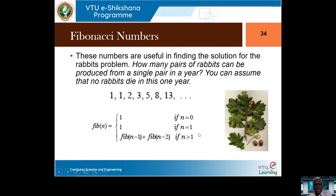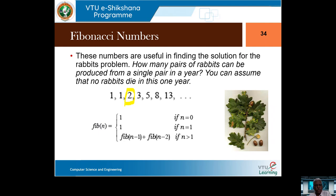We will quickly recap and then move on to how we find the nth Fibonacci number using a recursive tree. The Fibonacci sequence starts from 0 or 1 — the first two numbers are given as initial values. The third is calculated by adding the previous two. For example, 1 plus 1 is 2, and the next is 2 plus 1, that is n minus 1 and n minus 2.